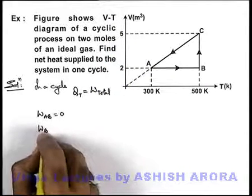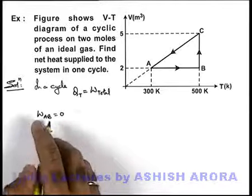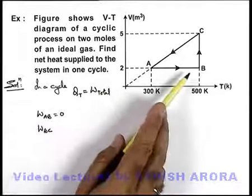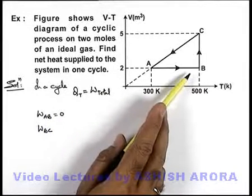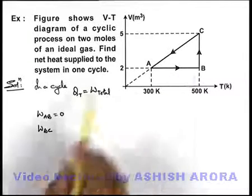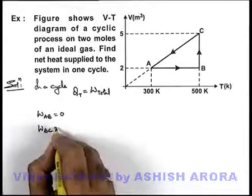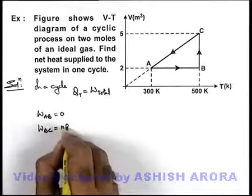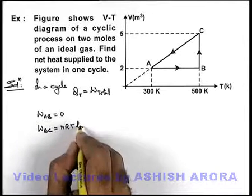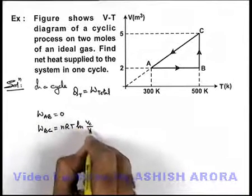If we calculate work done in the process B-C, we can see that B-C is an isothermal process. So here for an isothermal process we can state work done in the process B-C is equal to nRT ln(V₂/V₁), that'll be Vc upon Vb.